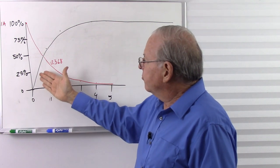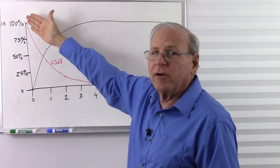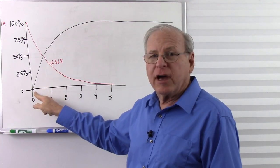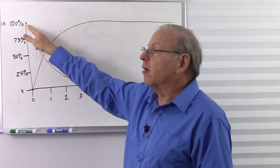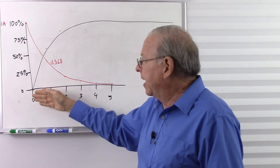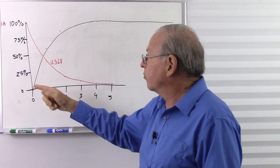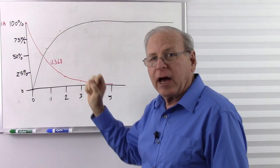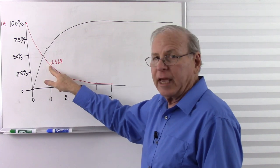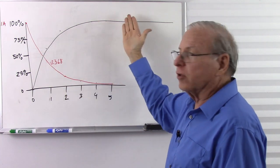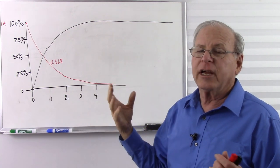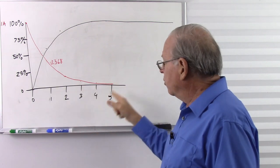So as the capacitor charges, the voltage goes up and the current goes down. When we first flip the switch, there's no voltage across the capacitor but we have a surge of current — maximum current — and the capacitor looks like a short circuit. After one time constant the capacitor is charged to 63.2% of source voltage, but current has dropped to 36.8%. The voltage continues to go up until it's 100%; the current continues to go down until the capacitor is fully charged and looks like an open circuit.